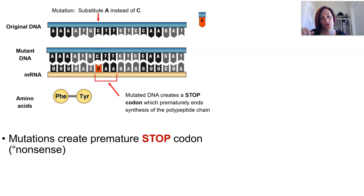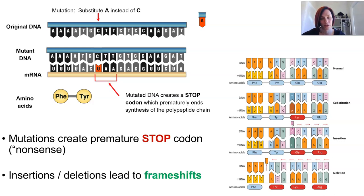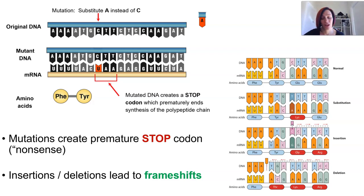If a base is inserted or deleted from a DNA sequence, this changes the starting point from where those bases are read, meaning the entire sequence after that point of insertion or deletion will be altered. This is known as a frameshift, and it can happen with one or a few bases — it will most likely change the polypeptide that's produced.